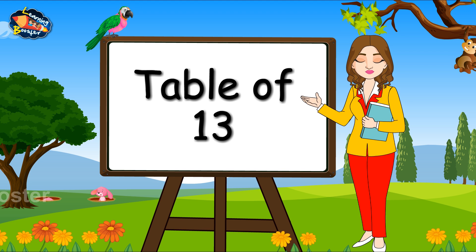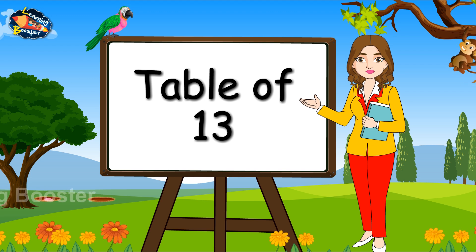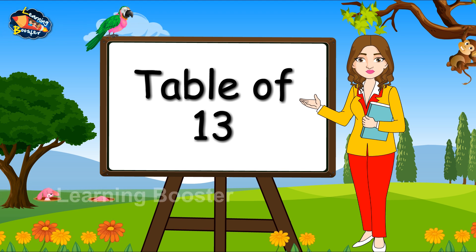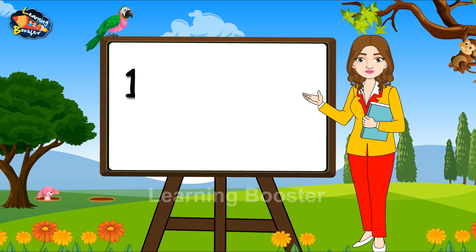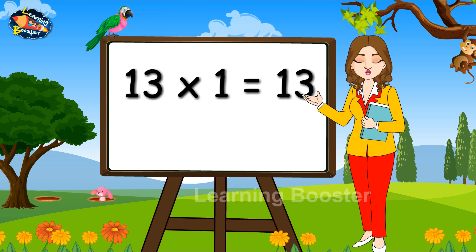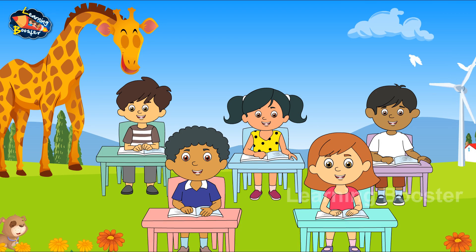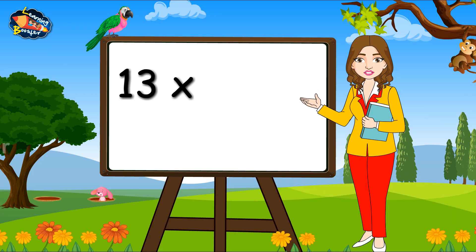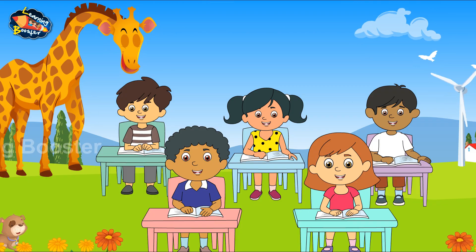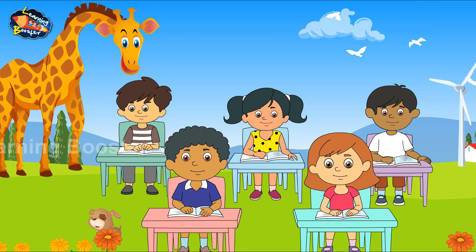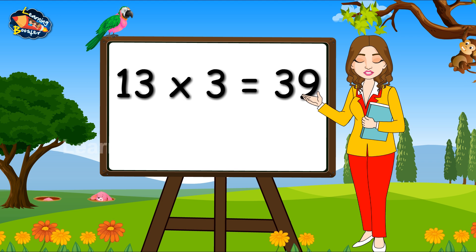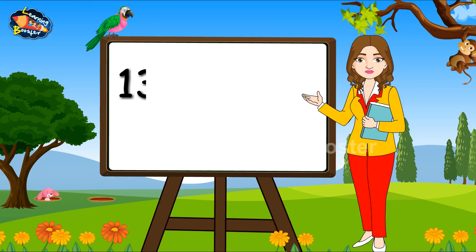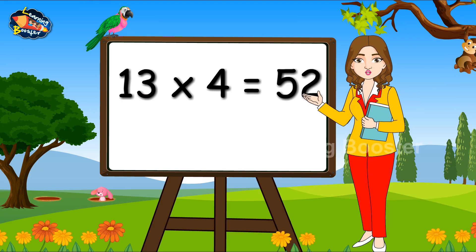Table of 13. 13, 1's are 13. 13, 2's are 26. 13, 3's are 39. 13, 4's are 52.